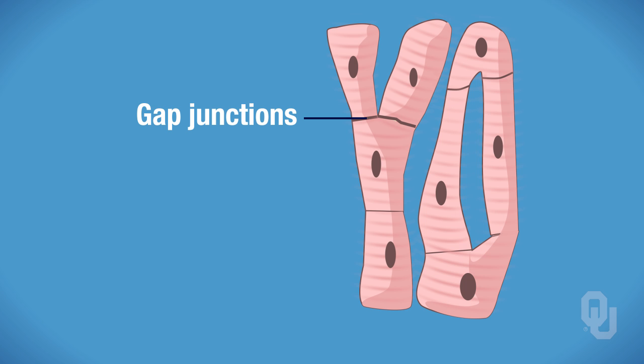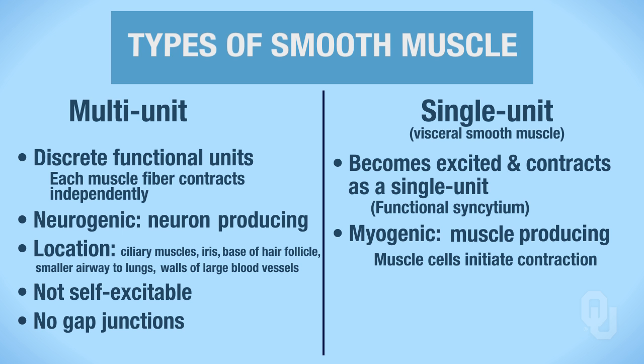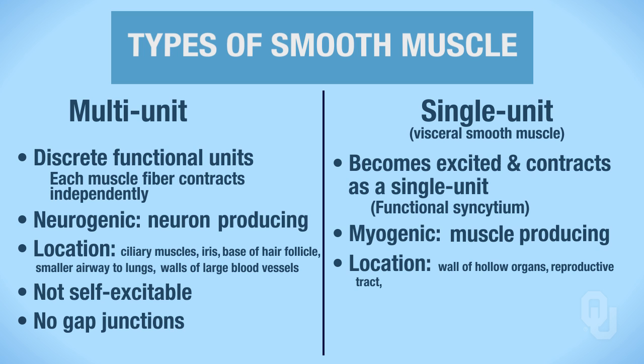Notice how the two characteristics go hand in hand: if the muscle is myogenic, it will have gap junctions; if it is neurogenic, there is no need for gap junctions. Single-unit smooth muscle is found in the walls of hollow organs. The reproductive tract, the digestive tract, and the urinary bladder are all good examples.